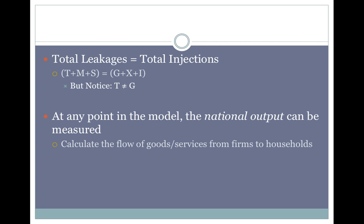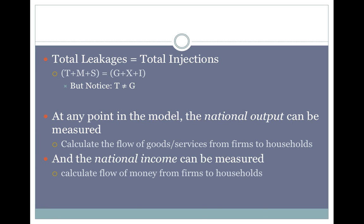At any point in the model, national output can be measured. We can calculate the value of the flow of goods and services, and if we add up all the value of output — or add the value of wages, rent, and other income — that equals national income. Essentially, we look at these flows to figure out how much money is in an economy, what the value of goods and services produced is, and whether the economy is growing or shrinking.